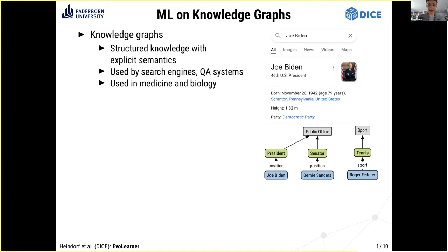Where does all this data come from? It comes from the Google knowledge graph — you can see a small excerpt down here on the right hand side. For example, Joe Biden held the position of president, which is a public office; Bernie Sanders held the position of a senator, which is also a public office; and Roger Federer plays sport. There are all kinds of important machine learning tasks on such knowledge graphs.